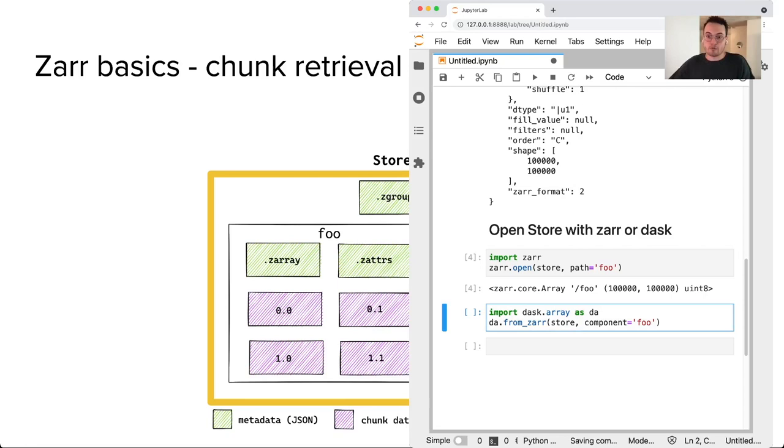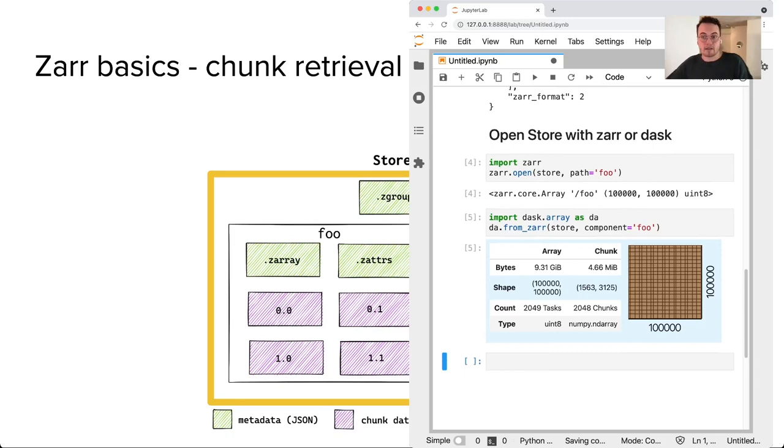Now, you probably won't want to use a Python dictionary as your custom store, but this demonstrates the flexibility of Zarr's data model and how we can sort of hack the store object to adapt existing Python libraries to read data as Zarr.